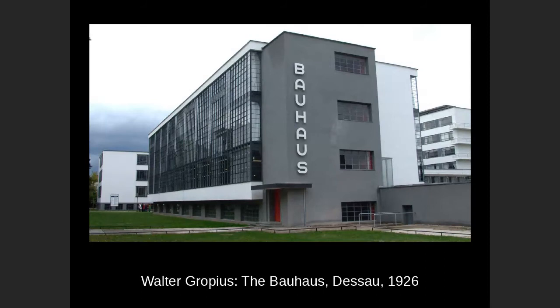The Bauhaus building is very similar to the AEG turbine factory and the Fagus shoe factory. This uses stucco instead of brick — international style architects liked the clean, smooth aesthetic of stucco or concrete. Down the side you see the glazed wall, just like we saw in those two earlier projects. But this isn't a factory building — it's a classroom building, a school. And so we start to see the industrial aesthetic being applied to other types of architecture.